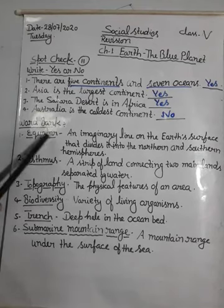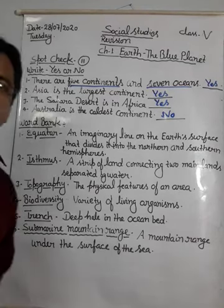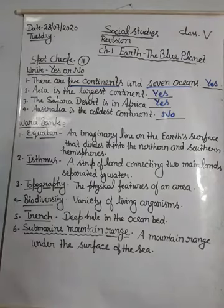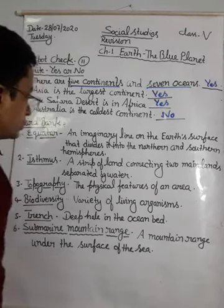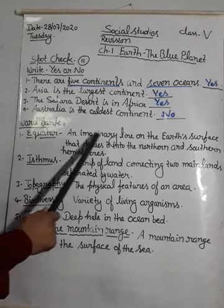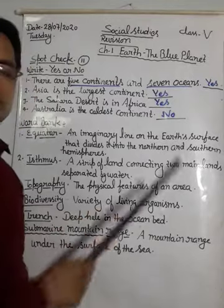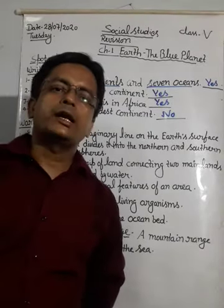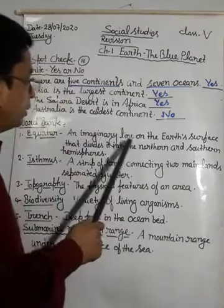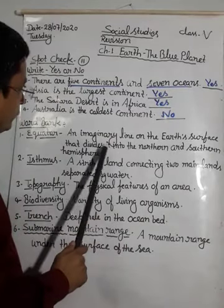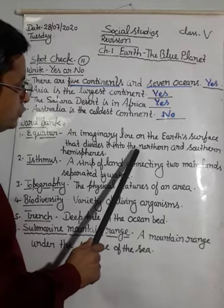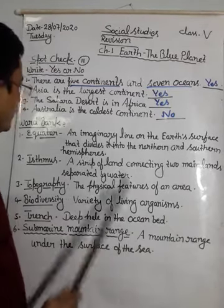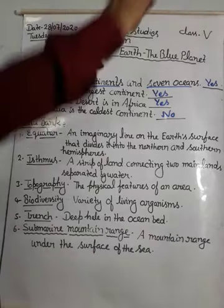The next part is the Word Bank. In the Word Bank, the first word is Equator. An imaginary line on the Earth's surface that divides it into the Northern and Southern Hemisphere — that is called the Equator.